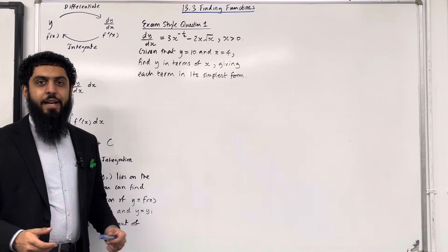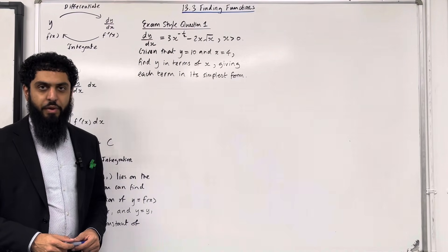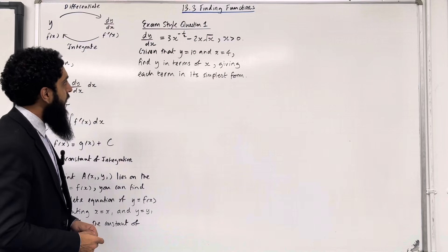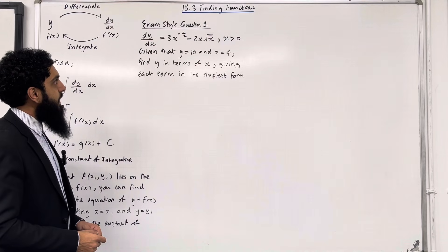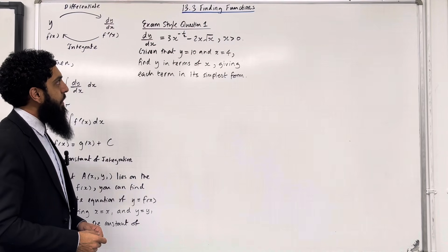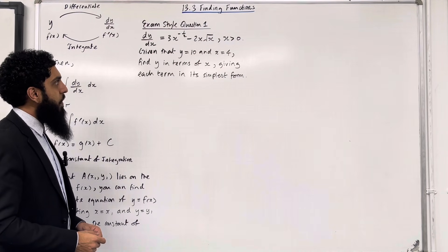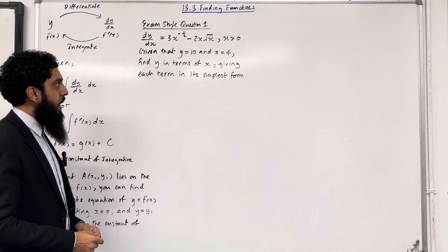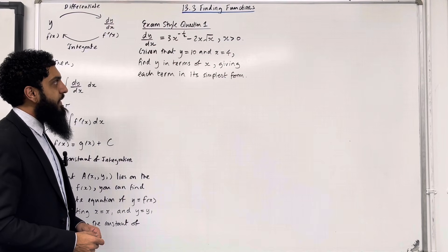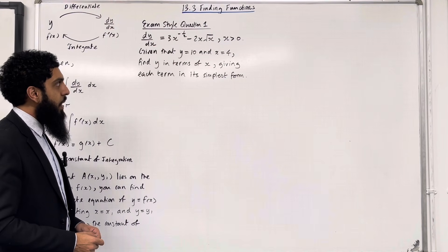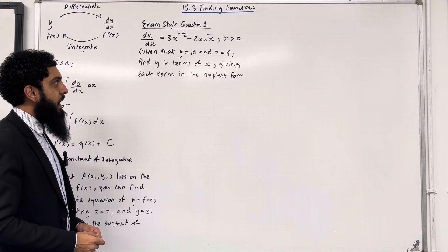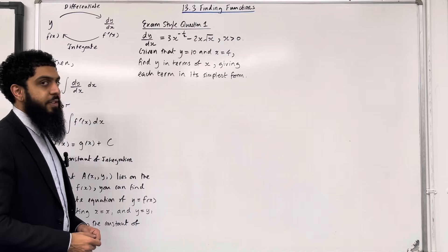Let's have a look at exam style question 1. dy/dx = 3x^(-1/2) minus 2x√x, where x is greater than 0. Given that y = 10 when x = 4, find y in terms of x, giving each term in its simplest form.